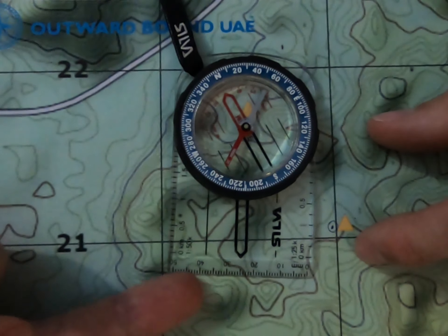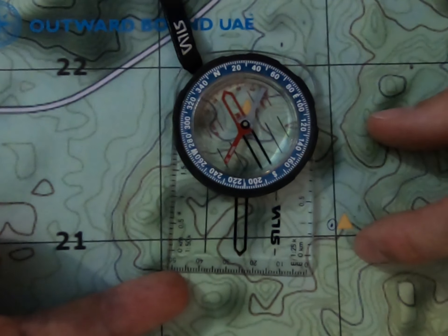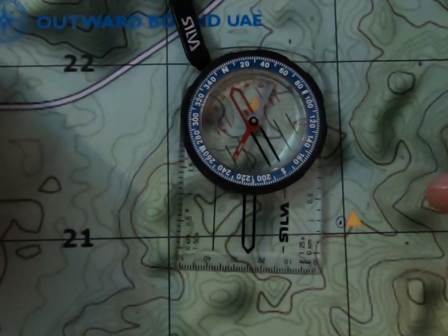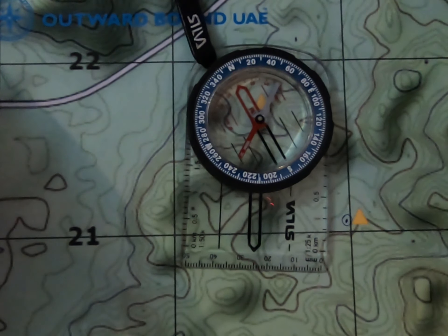For us, the best way to work that out is to use the ruler at the bottom, and that will give us an idea of what a kilometer is, or what every 100 meters is.